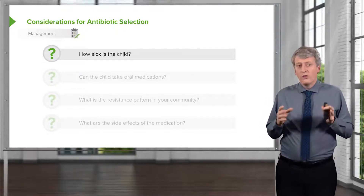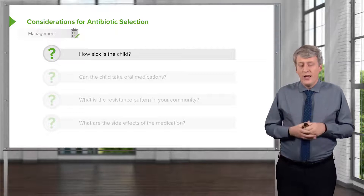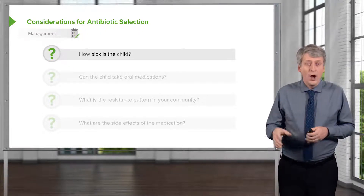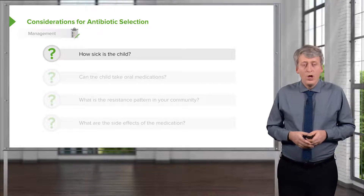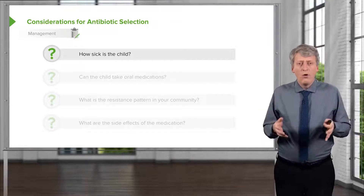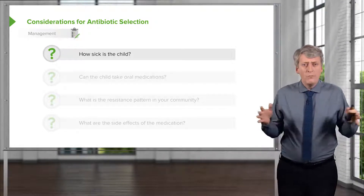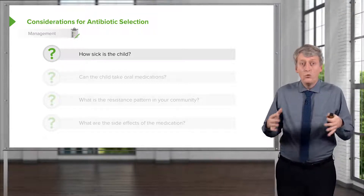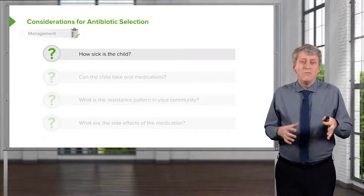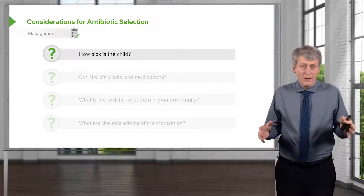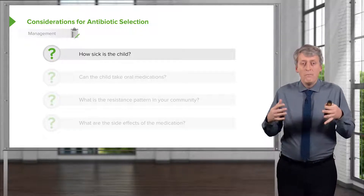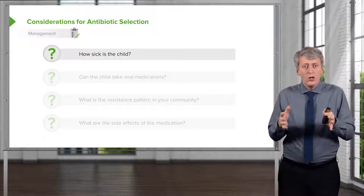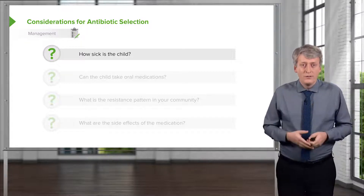First, we need to know how sick is this child. If the child is going to the wards or is staying in the outpatient setting, we're going to use a very narrow-focused antibiotic. We don't need a broad-spectrum antibiotic, and we're willing to take some risk that maybe the bacteria is resistant. Maybe we need to ramp up our antibiotics later, but we're going to start with a narrow-spectrum agent.